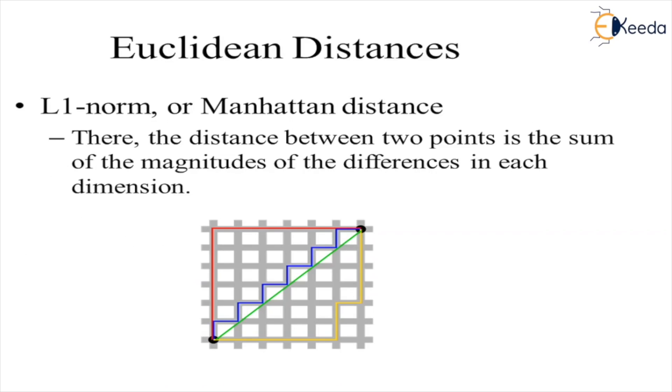L1 norm: There are three distances in Euclidean spaces. The L1 norm, we call it the Manhattan distance. What is Manhattan distance? The distance between two points is the sum of magnitudes of differences in each dimension. If you observe this diagram, the red line shows the direct distance between the two points, or else you can have zigzag distances.